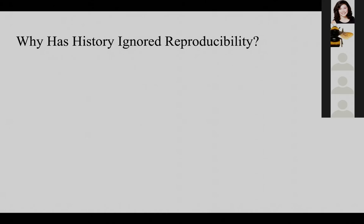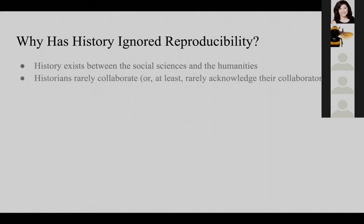A few words on why history has largely ignored reproducibility. History exists between the social sciences and the humanities — at some institutions it sits in a social sciences division, at others in a humanities division. The humanities especially has been able to ignore or even contest calls for reproducibility. Historians rarely collaborate, and I think this affects reproducibility because you don't have to make something accessible or reproducible for a partner. The solo-authored monograph is still the gold standard in the field. I should note that I think historians do collaborate — they just don't acknowledge the extent of that collaboration, especially with their closest collaborators, which are librarians and archivists.